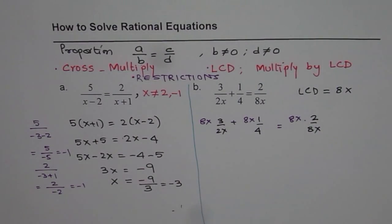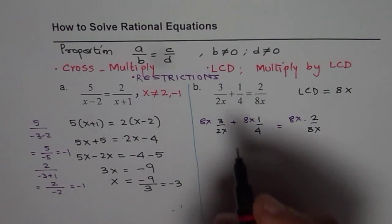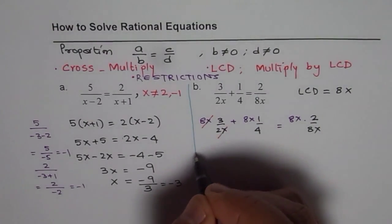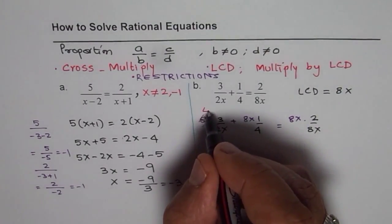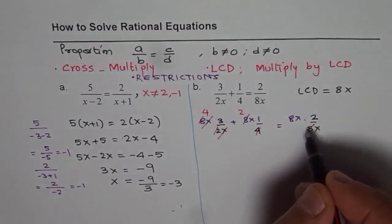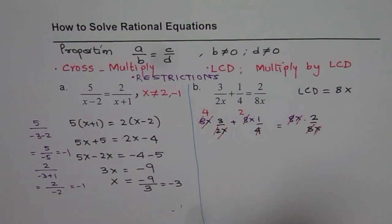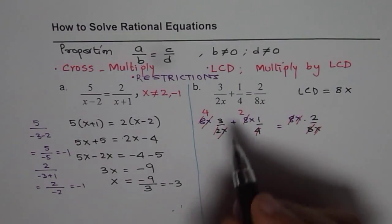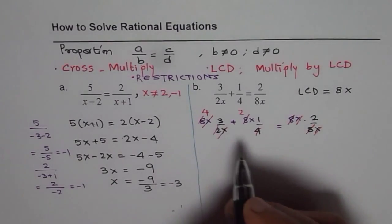Now this helps to get rid of fractions. That's the whole idea. So x and x cancels out, you get 2 goes into 8 four times. Here 4 goes 2 times. And in this case 8x gets cancelled off.